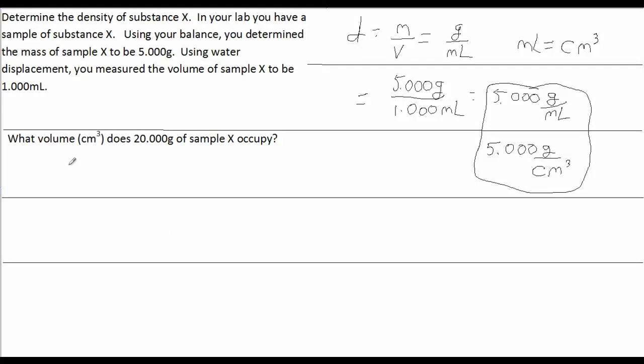Let's start off with 20 grams of substance X. 20.000 grams of substance X. Now, I need to convert this mass quantity to a volume quantity. I'm going to use density as a conversion factor. Using the skill of dimensional analysis, I'm going to do a conversion. I'm going to put grams in the denominator because I want to get out of the gram world and enter the volume world.